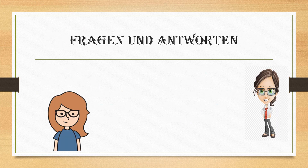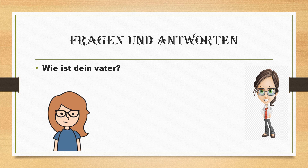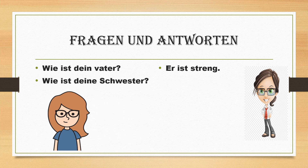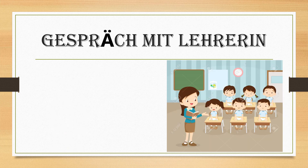Fragen und Antworten — questions and answers. 'Wie ist dein Vater?' — How is your father? 'Er ist streng' — He is strict. Er means he. 'Wie ist deine Schwester?' — How is your sister? 'Sie ist freundlich' — She is friendly. Once again: Wie ist dein Vater? Er ist streng. Wie ist deine Schwester? Sie ist freundlich.